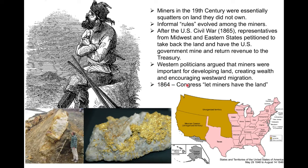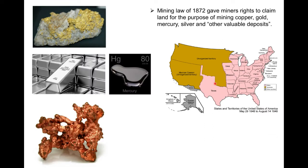In 1864, Congress agreed with these western politicians and essentially let the miners have the land. As a result, in 1872, the United States Congress passed what we now call the Mining Law of 1872. That mining law gave miners the rights to claim land for the purpose of mining metals such as copper, gold, mercury, silver, and other valuable deposits. Importantly, the metals covered by the Mining Law of 1872 are what you can think of as hard metals in rock — this is going to be different from very large volume mineral deposits such as oil and natural gas.